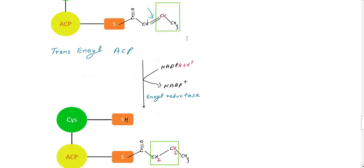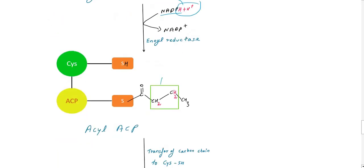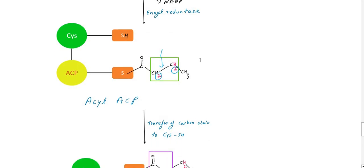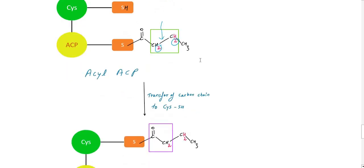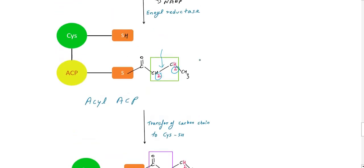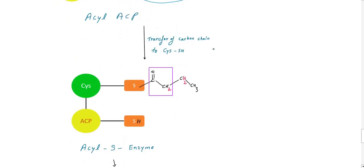Then the second reduction step takes place: NADPH2 donates hydrogen to the double bond, converting it from a double bond (C=C) to a single bond (CH2-CH2). The product is acyl-ACP. The acyl group is then transferred to the cysteine SH group, freeing the ACP SH for the next round.